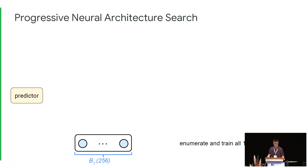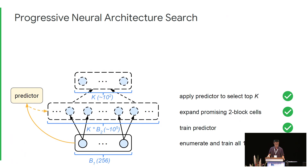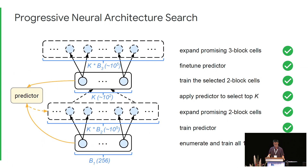We begin by enumerating, training, and evaluating all one-block cells. We then train the predictor with these data points collected in the expensive way. At the same time, we expand these one-block cells into two-block candidates by enumerating all possible ways the second block can be appended — there are hundreds of thousands of them. Fortunately, we have the predictor which can rank these candidates in minutes, and the top K candidates are selected according to the predicted score. Since the candidate pool is now small enough, we turn to the expensive assessment and train these candidates using GPU machines in parallel. The new data points are then used to fine-tune the predictor, and we expand two-block candidates into three-block candidates, again applying the freshly fine-tuned predictor to select the top K. These steps are repeated until we reach B equals five.